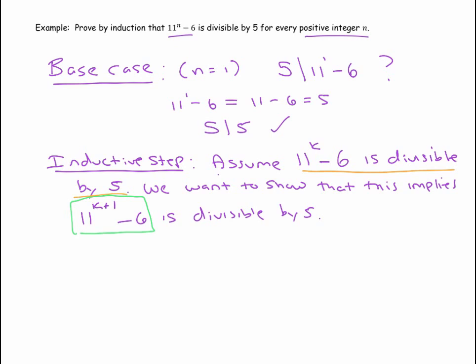So 11 to the k minus 6 is divisible by 5. There's another way of saying that: 5 divides 11 to the k minus 6. Which also means that I could say that 11 to the k minus 6 is equal to 5 times some natural number.